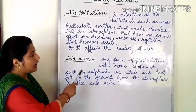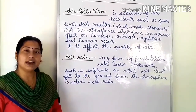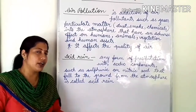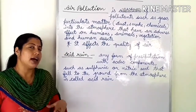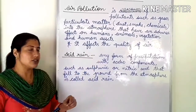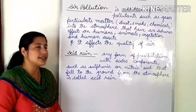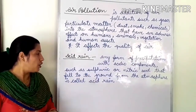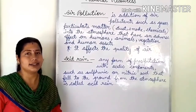So what is acid rain? Any form of precipitation with acidic compounds — meaning any precipitation like rain, snowfall, hail and sleet — that falls to the ground from the atmosphere containing acidic compounds like sulfuric acid and nitric acid is called acid rain.